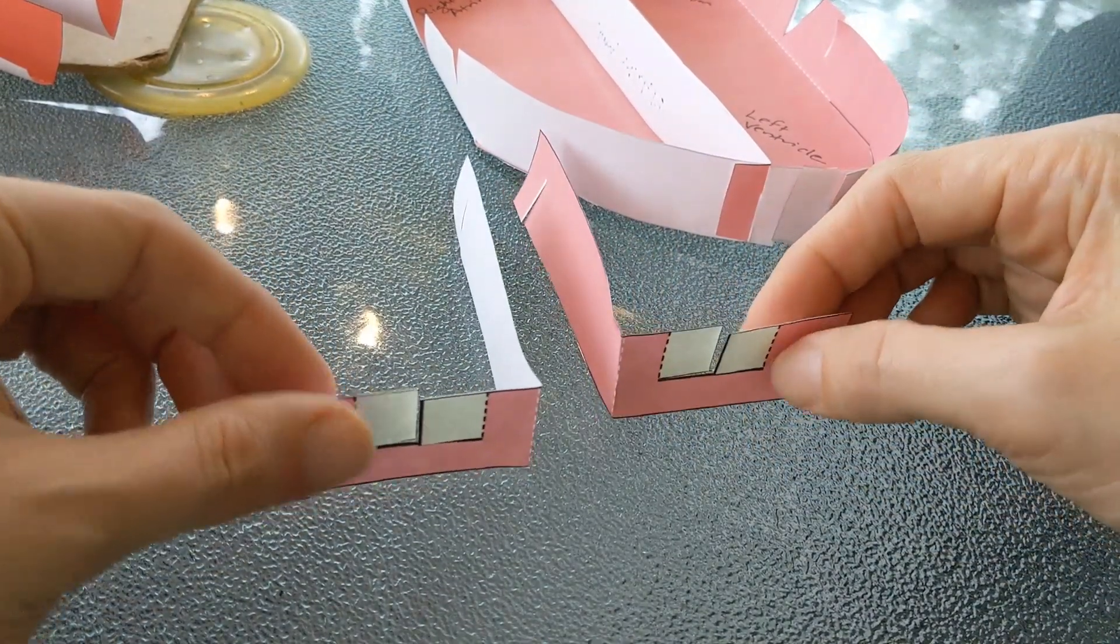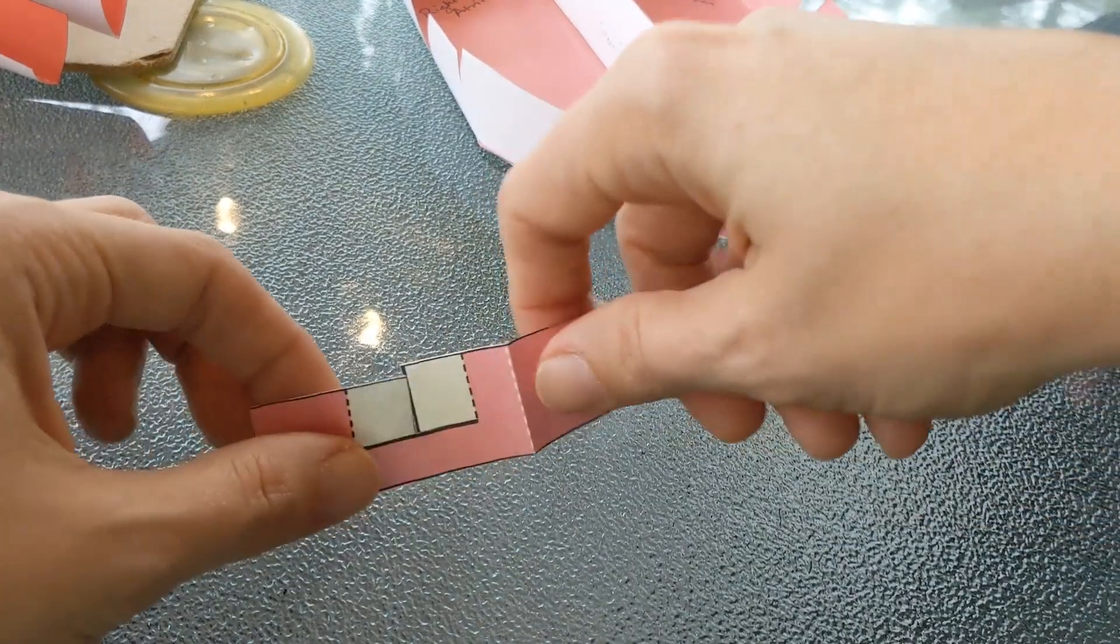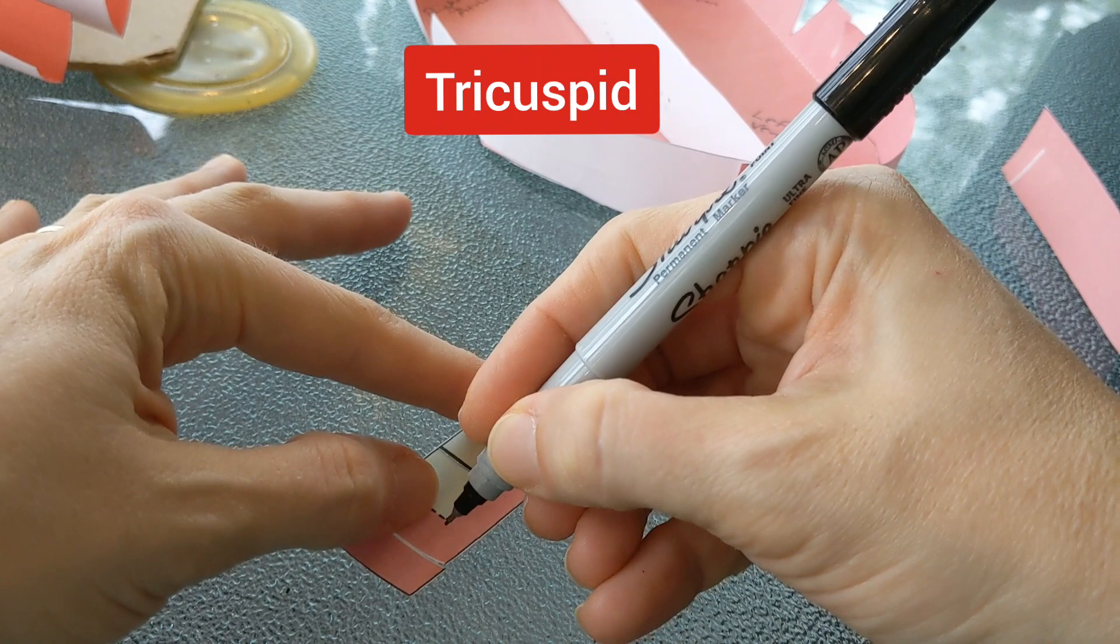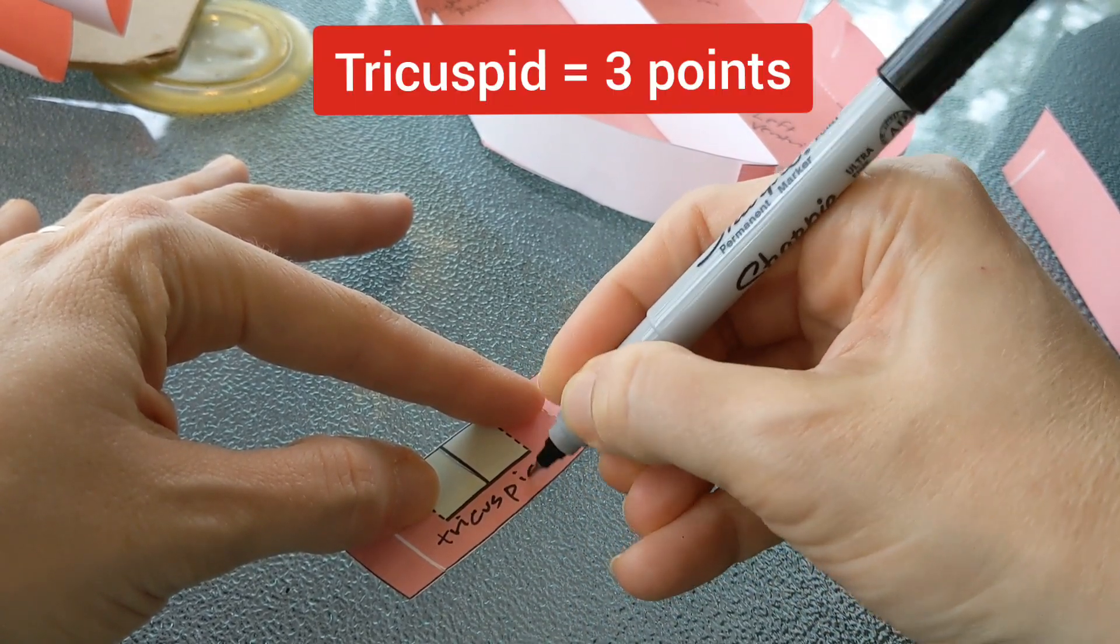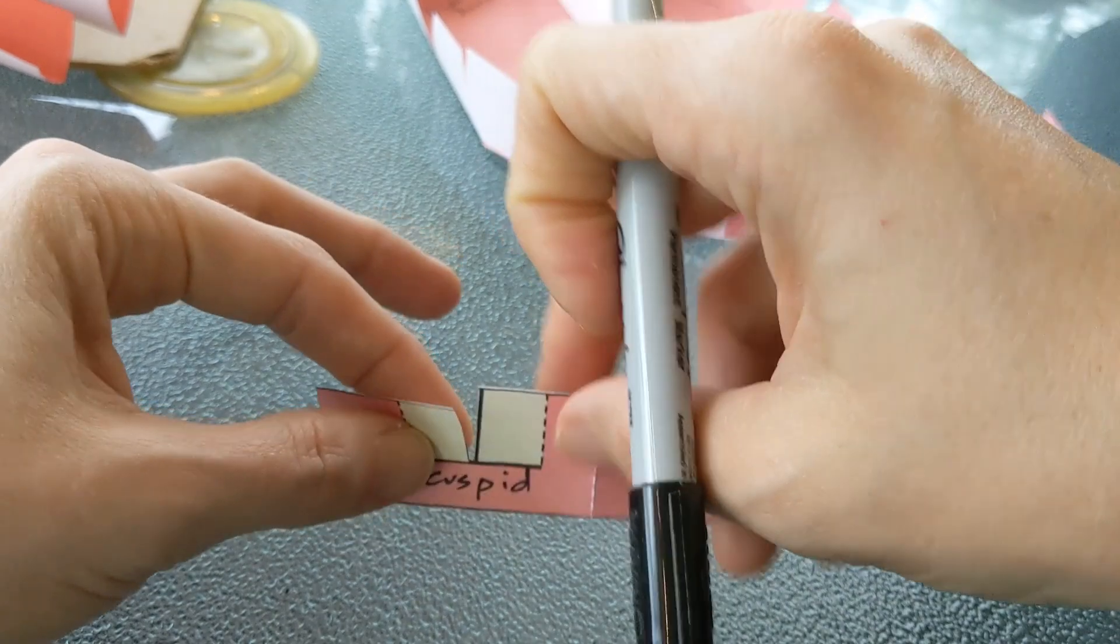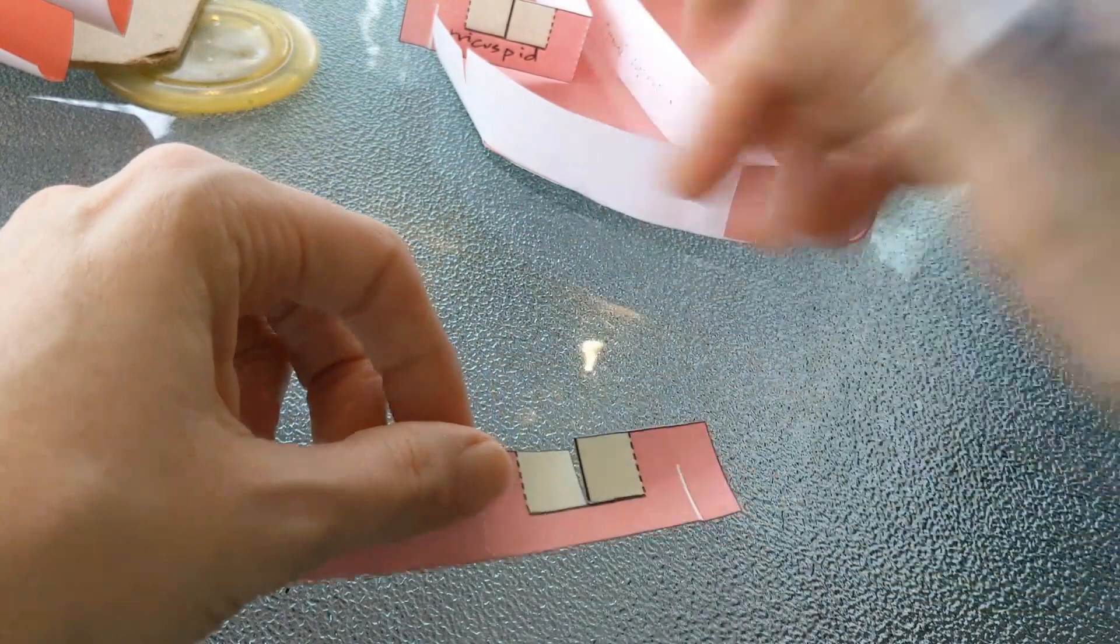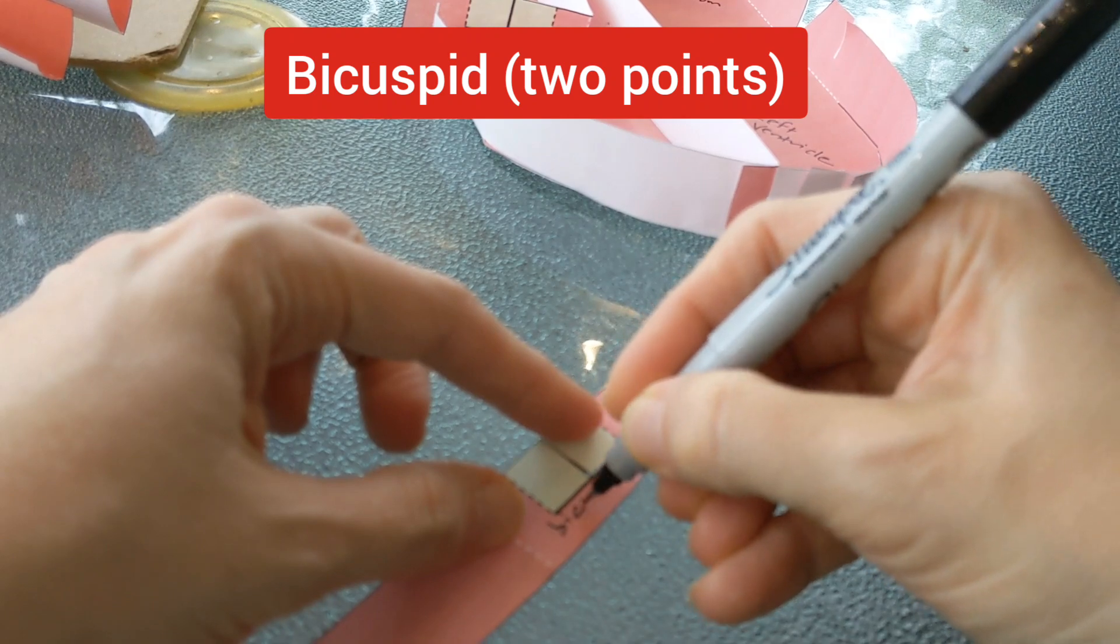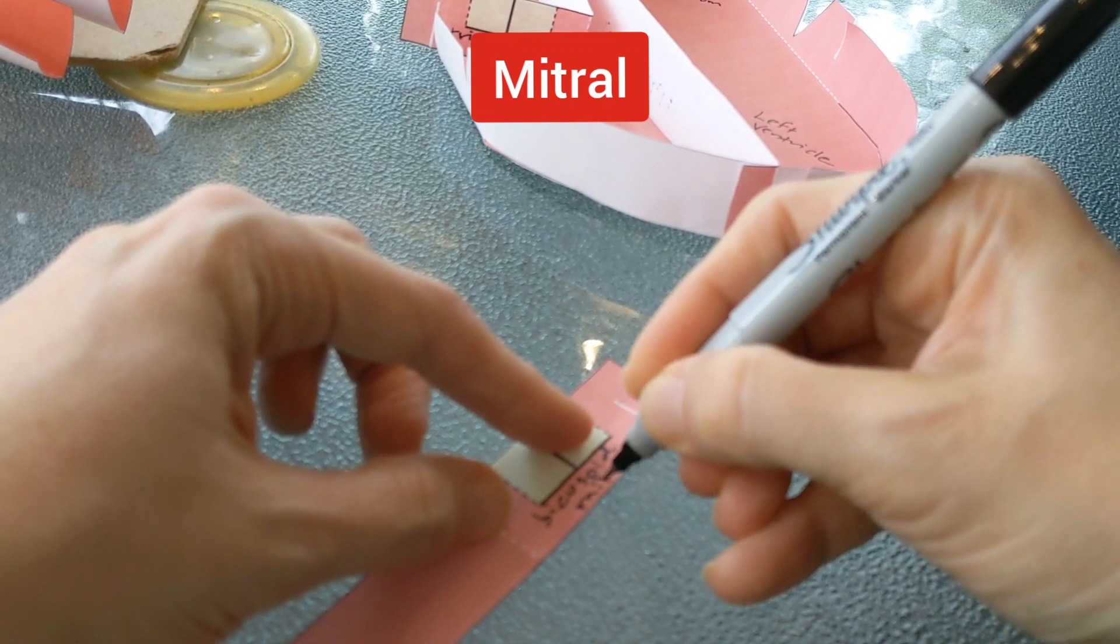And I want to label the valves before we do this. So this one is going to go on the right side of the heart between the right atrium and the right ventricle. And that valve is called the tricuspid valve. Make sure you can say tricuspid. It's actually named for the fact that it has three points. Tricusp. On this it looks like it has two flaps but in reality it has three. Then this one goes on the left side of the heart and it has two names. It is called the bicuspid valve, two flaps, but more commonly it's referred to as the mitral valve.